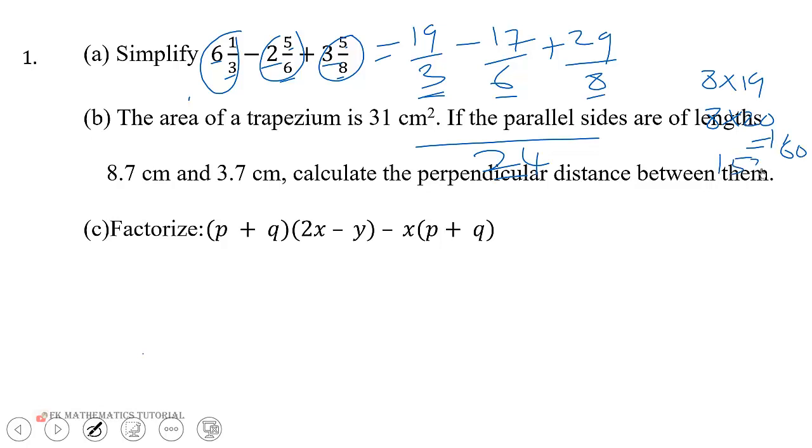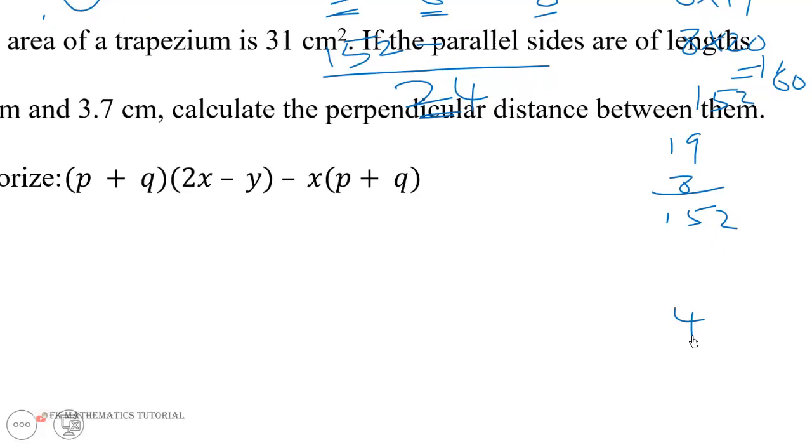So you can also work it this way: 19 times 8, then you get the 152. So this one is 152 minus. Now 6 goes into 24 how many times? 4 times.